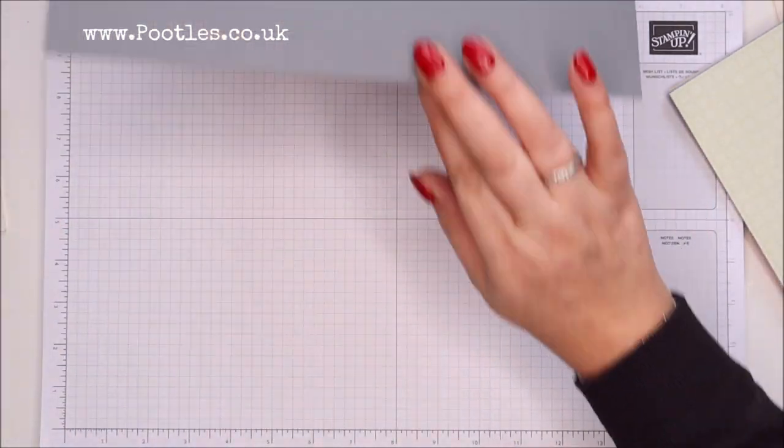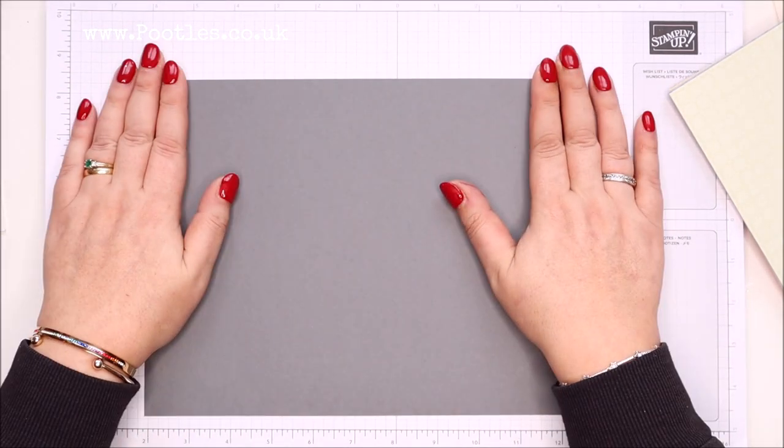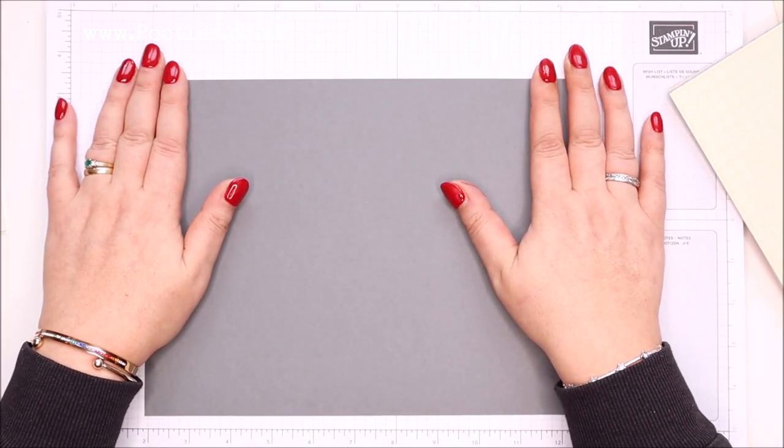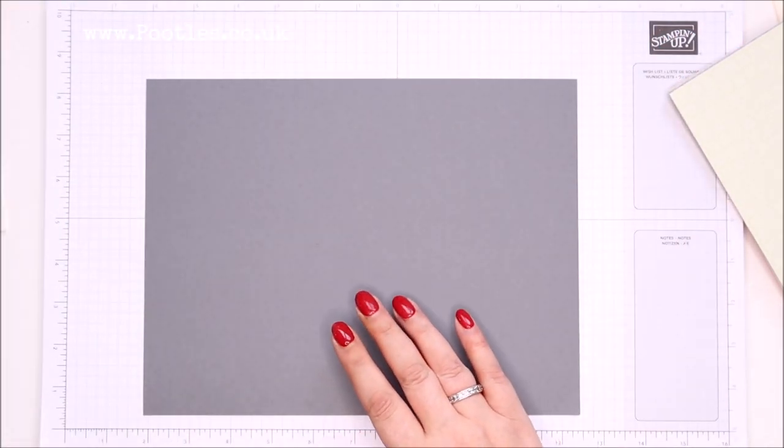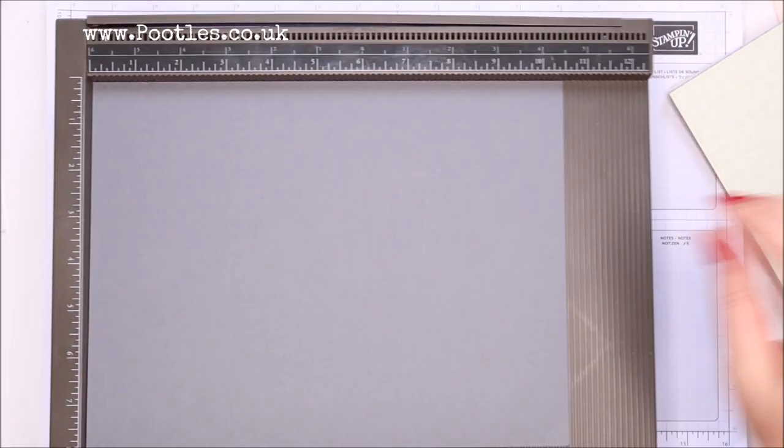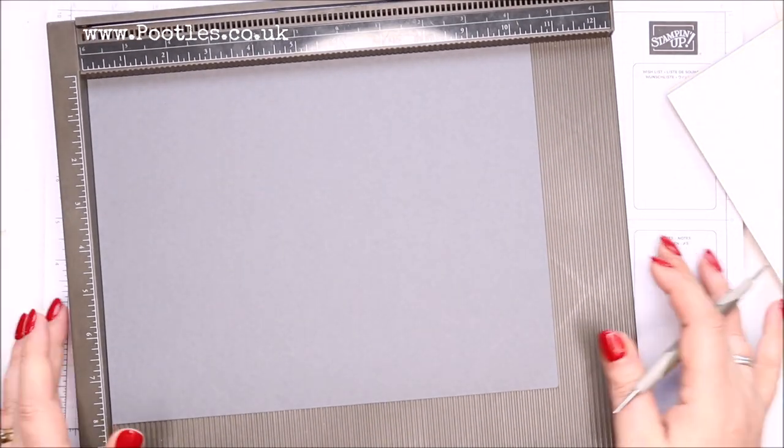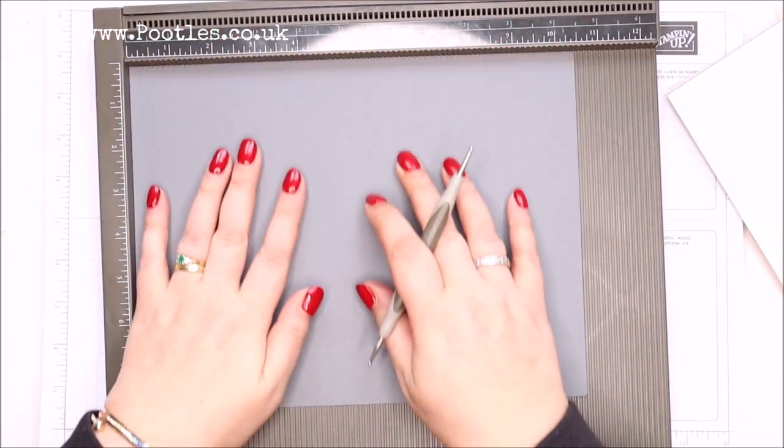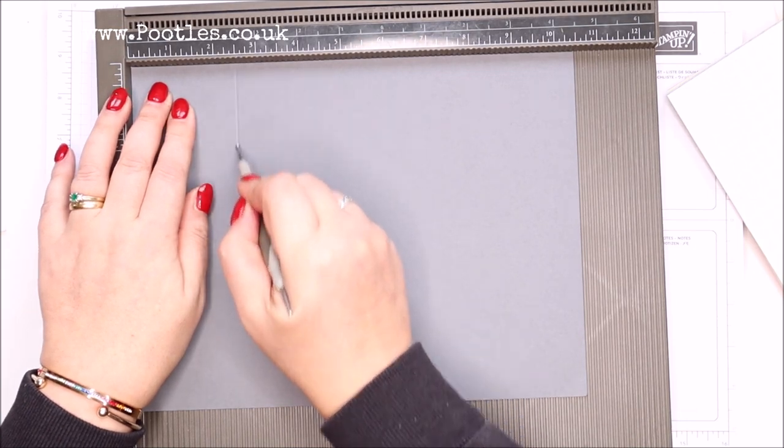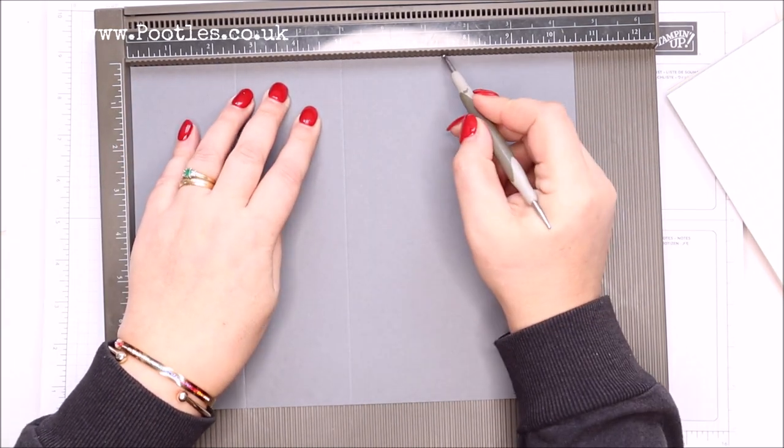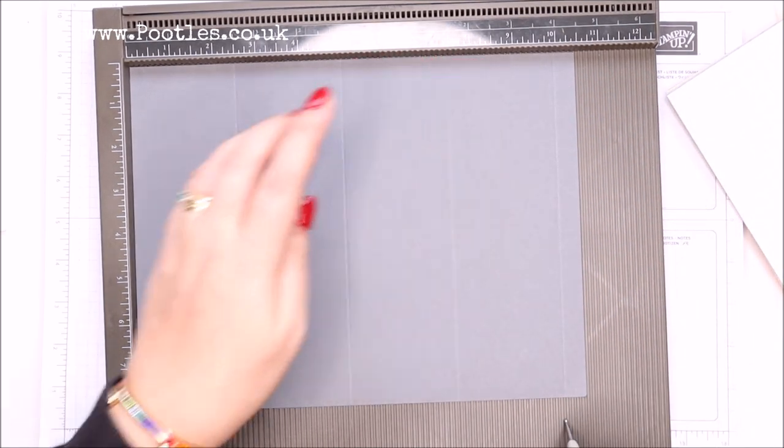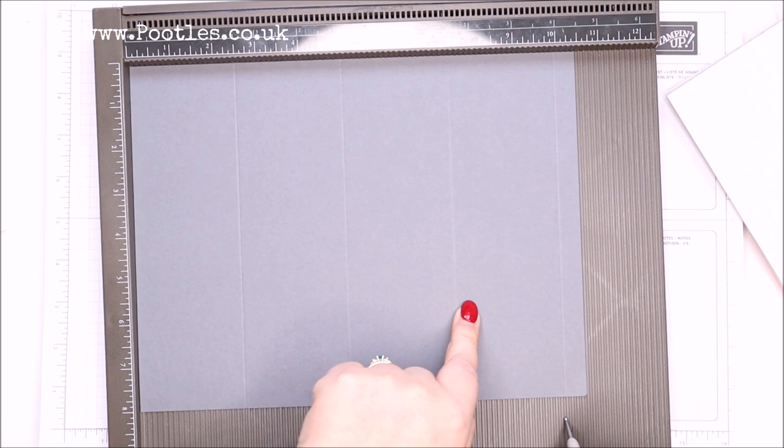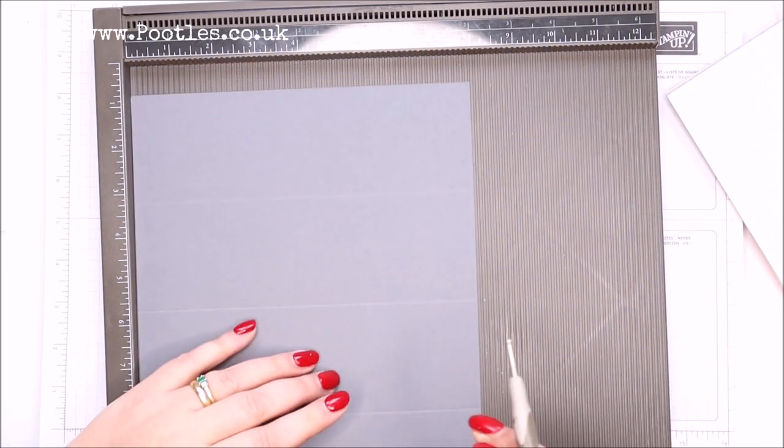You need a piece of cardstock that's ten and a half inches by eight inches, 28 by 21 centimeters. This is basic gray, not a color I go for very often. On the long side, score it at two and a half, five, seven and a half, and ten inches, which in metric is six and a half, thirteen, nineteen and a half, and 26.